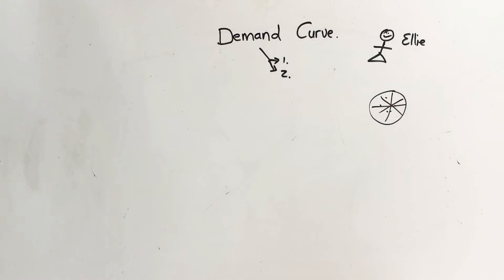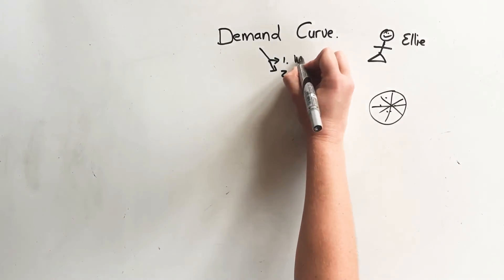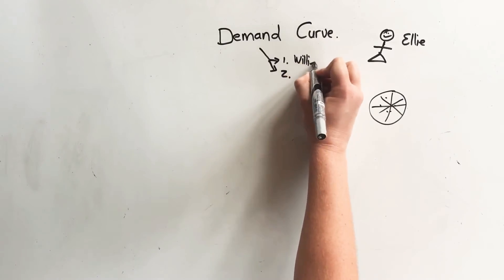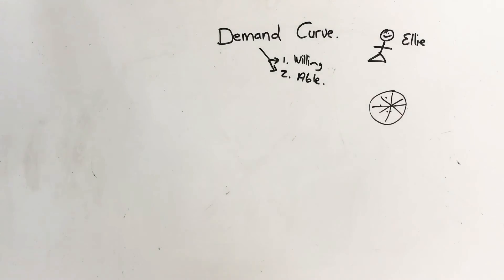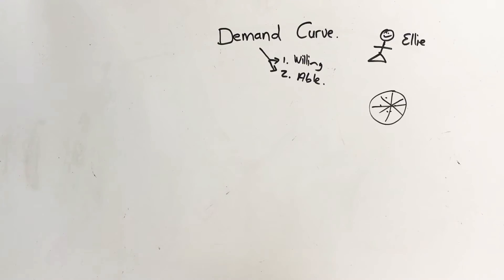Very important to remember is that demand is only willing and able people. You have to be willing to buy the pizza and you have to be able to buy the pizza. We are excluding everybody who wants a pizza but doesn't have enough money — they don't fall part of the demand curve because they can't afford it. We're also not including people who have enough money but do not want to buy it because they're on a diet. So demand is when you are willing to buy something and you are able to buy something.